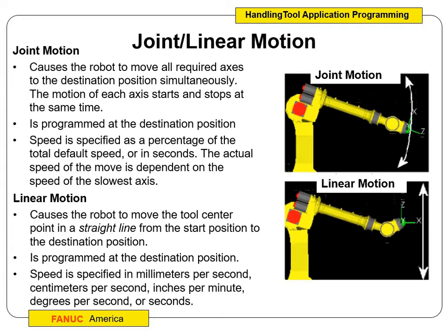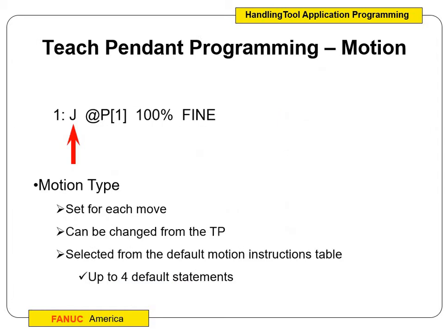Sometimes joint motion is fine — going back to our perch position with no obstacles in the way. But if we want to make sure our box is on the same plane, we'll use linear motion and it will do a straight line. When you define motion types, you move the cursor on the teach pendant and define it. Right now every teach pendant defaults to joint, so you'll have to go over and change it to circle or linear. You can change it for each move.